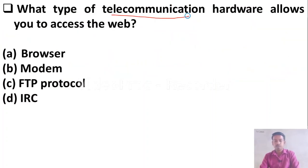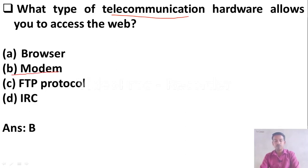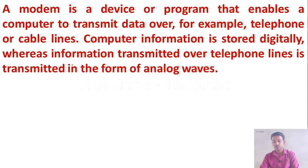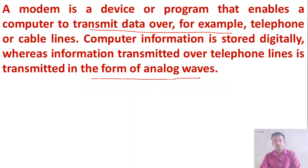What type of telecommunication hardware allows you to access the web? Option A: browser, Option B: modem, Option C: FTP protocol, Option D: IRC. The right answer is Option B, modem. A modem is a device or program that enables a computer to transmit data over telephone or cable lines. Information is stored digitally, whereas information transmitted over telephone lines is in the form of analog waves.